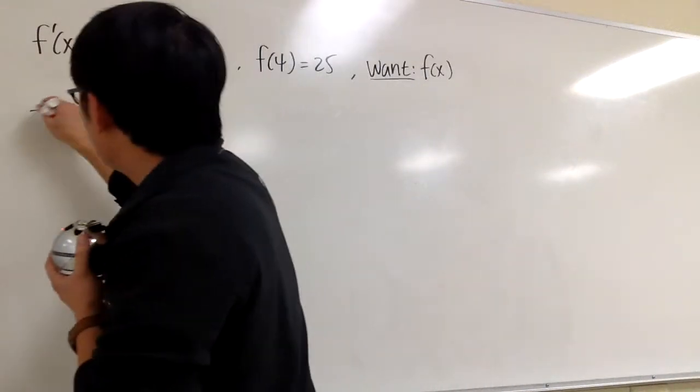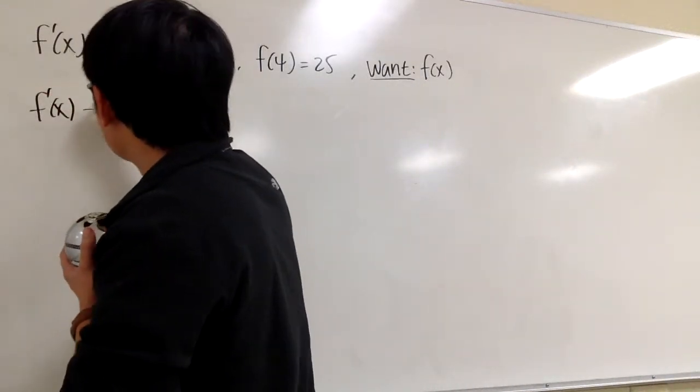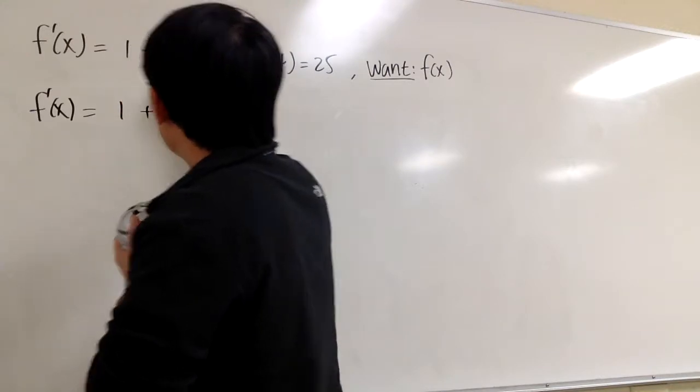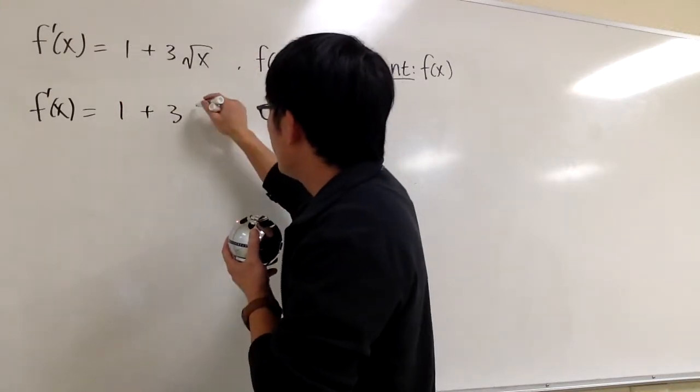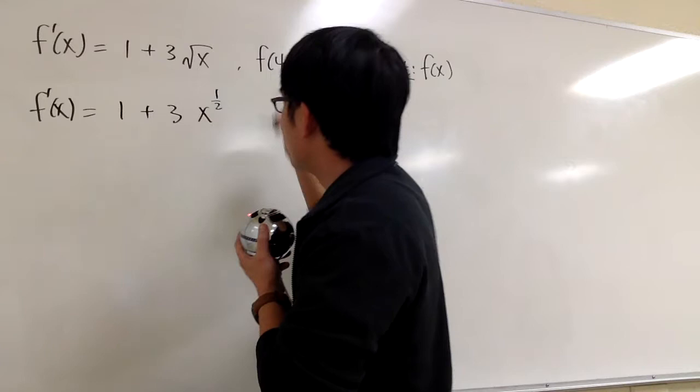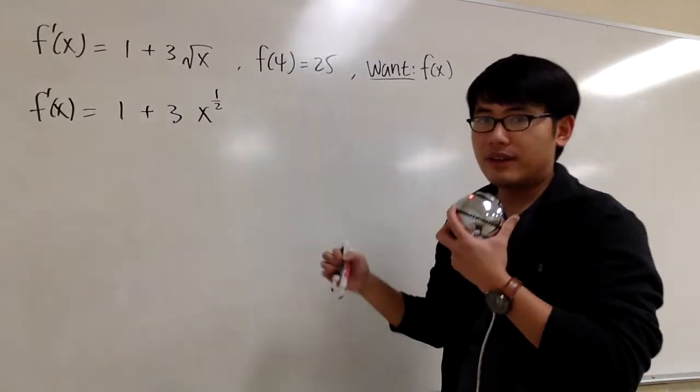So let me rewrite the derivative f'(x). This is going to be 1 plus the 3 stays the same, but then we will have x to the 1/2 power. And that's what we have, and we are ready to go.